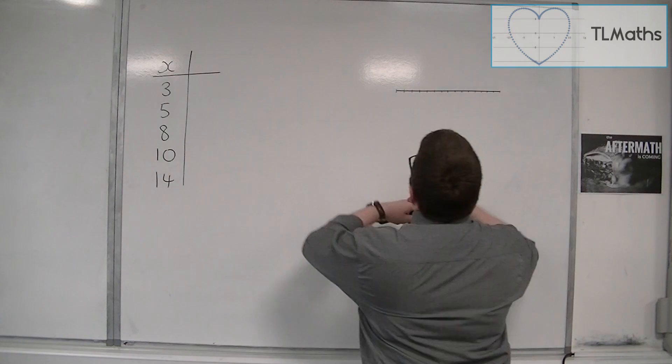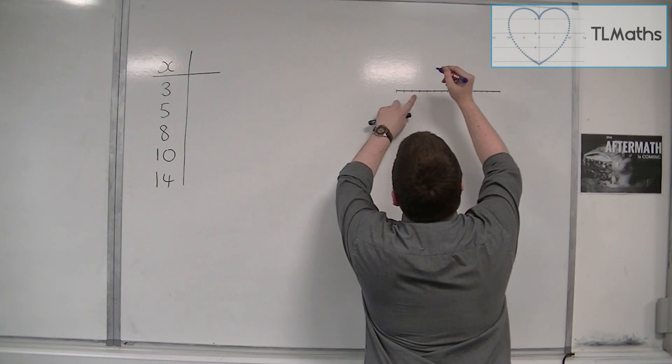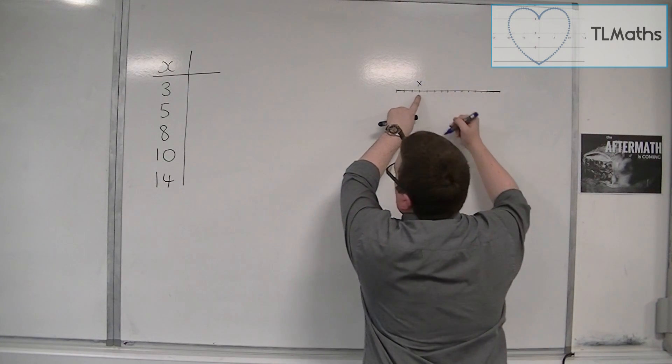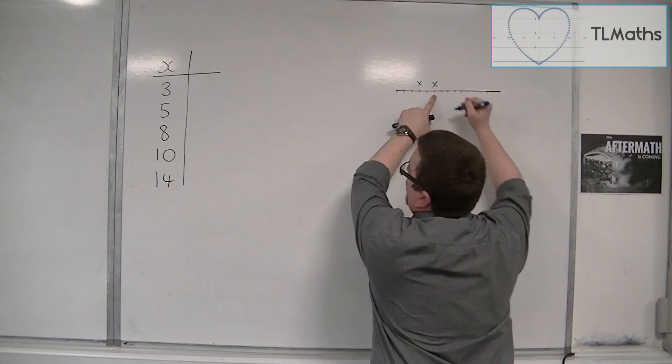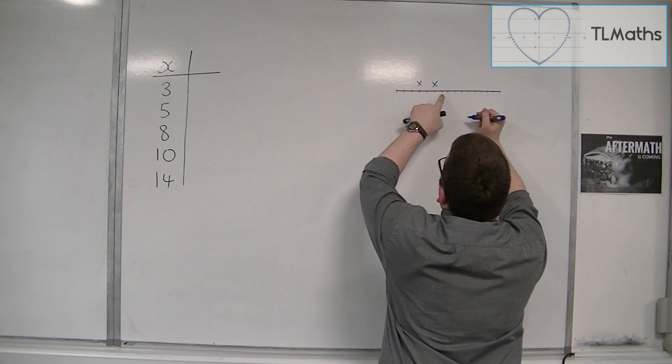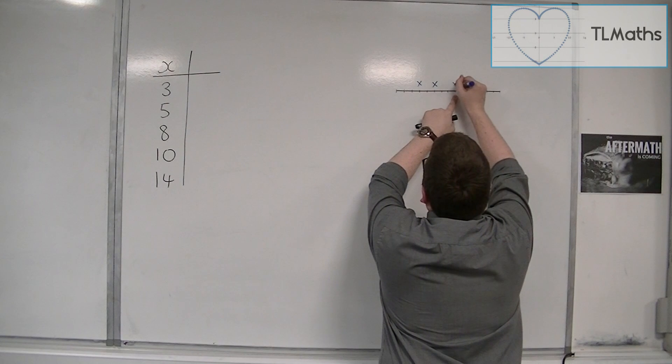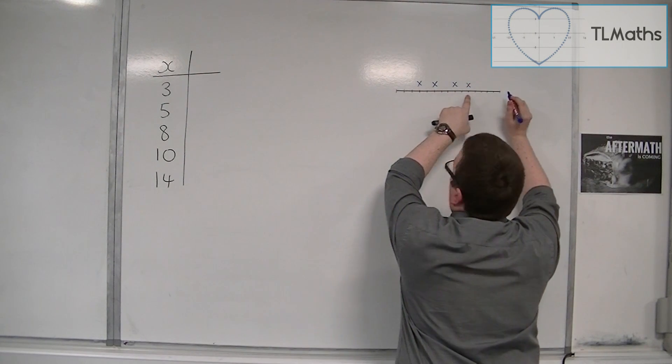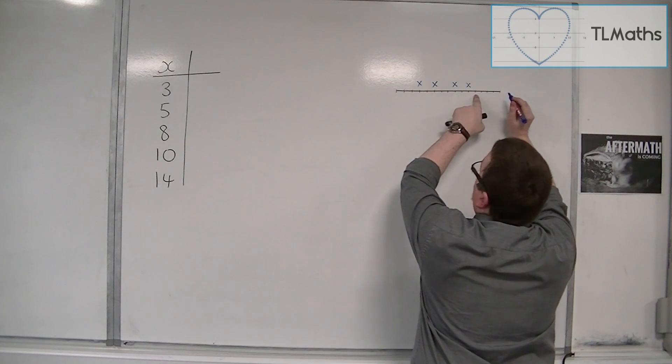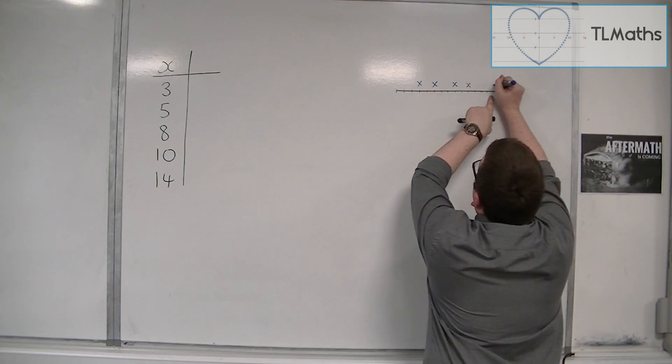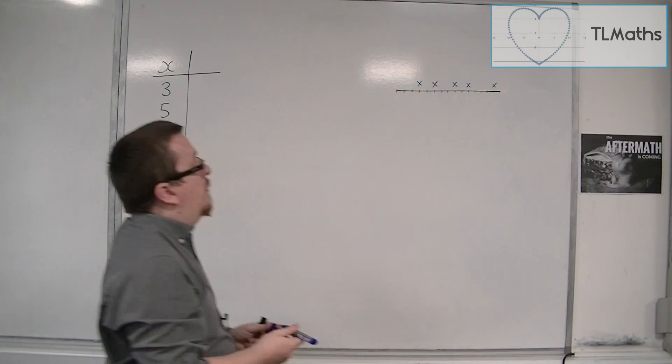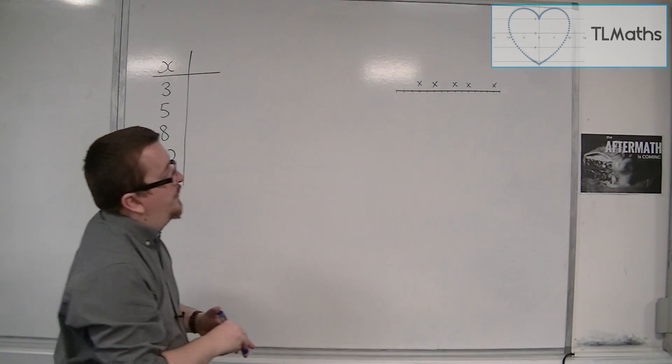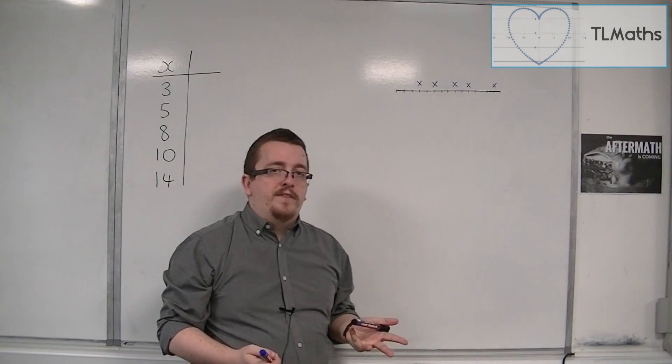Then I've got the number 3, so 0, 1, 2, 3. Then I've got 5, 4, 5. Then I've got 8, so 6, 7, 8. Then I've got 10, so 9, 10. And 14, so 11, 12, 13, 14. So this is what my data looks like visually. You can see how spread out the data is.